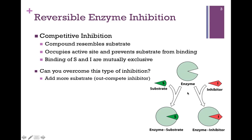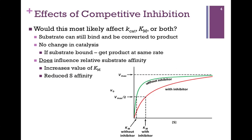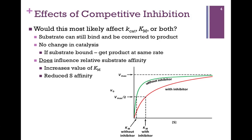The question is: can you overcome this type of inhibition? Yes, you can. Since it's a simple competition for the same site between substrate and inhibitor, if we add more substrate, we make it more likely that the enzyme will bind substrate than inhibitor. What's going to change? If substrate binds, we still get product at the same rate, so there's no change in catalysis — no change in Vmax. But we did change the step where enzyme binds substrate; we reduced the affinity of the enzyme for the substrate, which means we increased Km. As Km decreases, affinity increases, so if the inhibitor reduces affinity, we're going to increase Km.